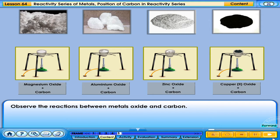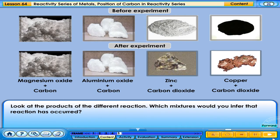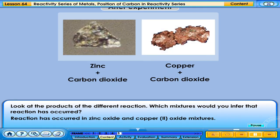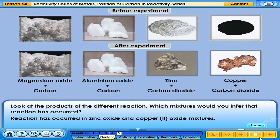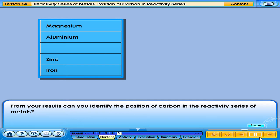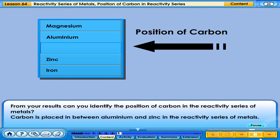Observe the reactions between metal oxides and carbon. What will happen if carbon is more reactive? Look at the products of the different reactions. Which mixtures would you infer that reaction has occurred? Reaction has occurred in the zinc oxide and copper oxide mixtures. From your results, carbon is placed in between aluminum and zinc in the reactivity series of metals.